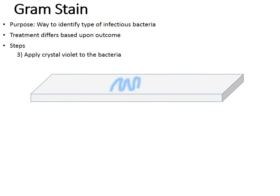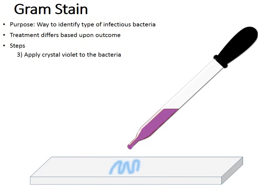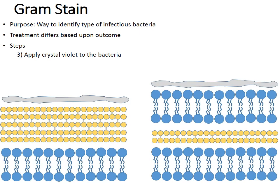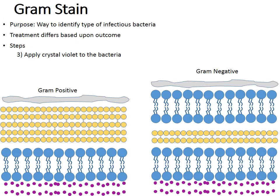The first chemical we use is called crystal violet. Like the name implies, it has a purplish violet color. We add a few drops of crystal violet onto the bacteria sample. Zooming in on the bacteria trapped on the glass slide, we see gram-positive bacteria on the left and gram-negative on the right. The purple crystal violet molecules pass through the layers of the bacteria into the actual bacteria cell.